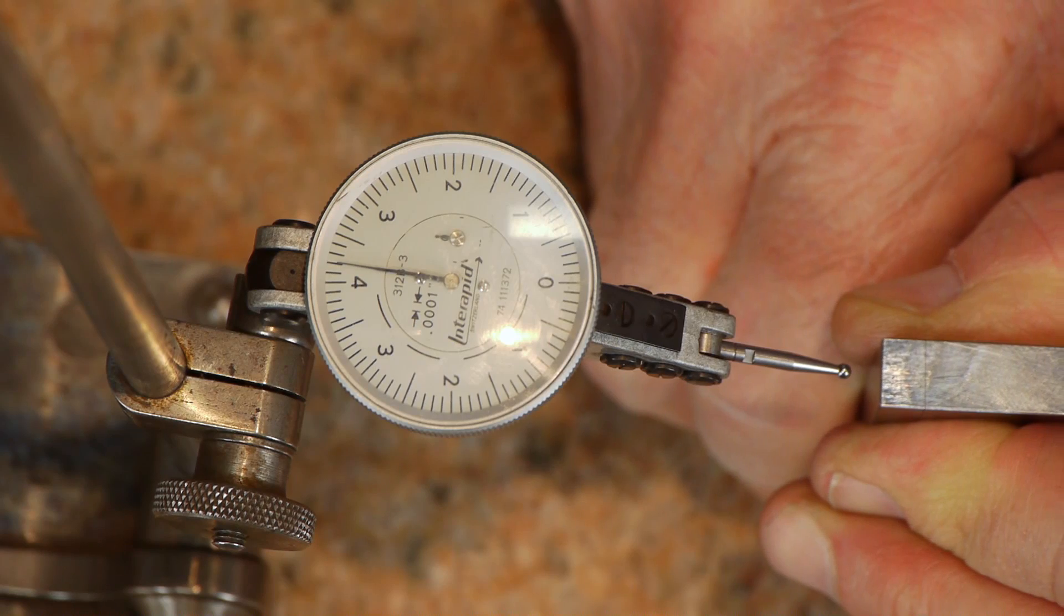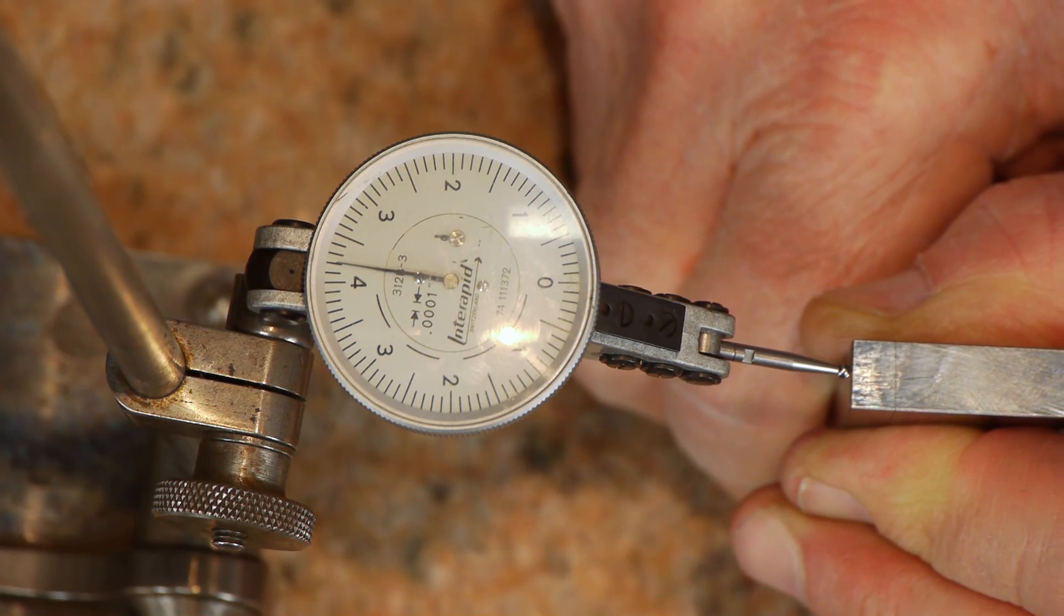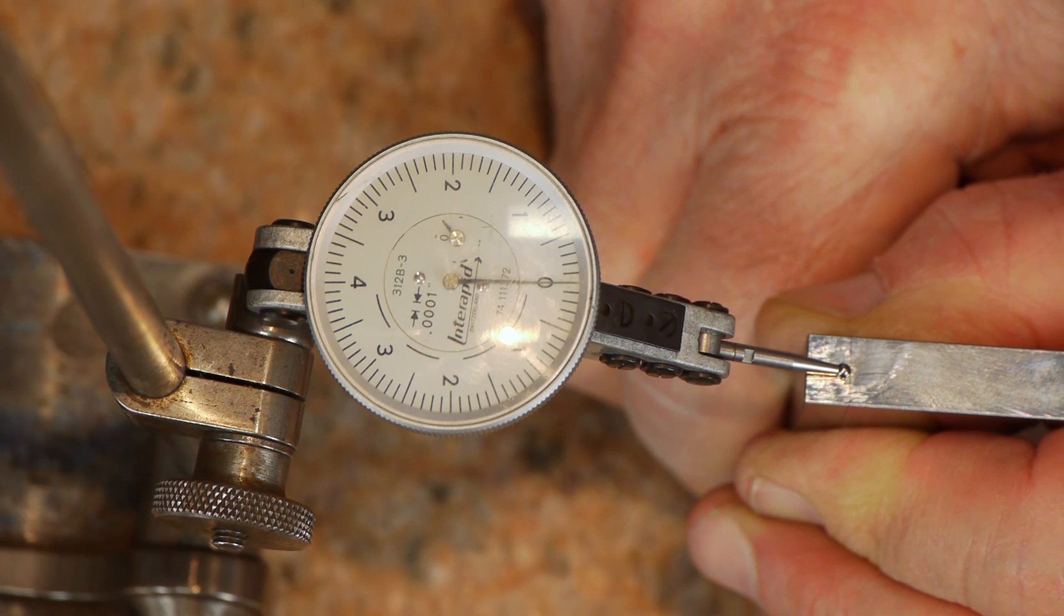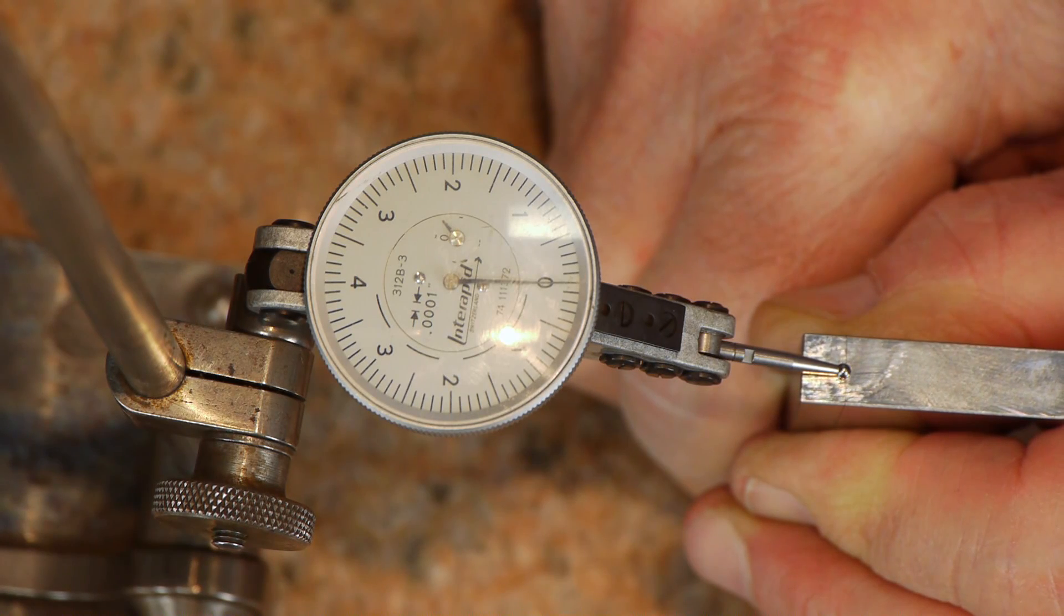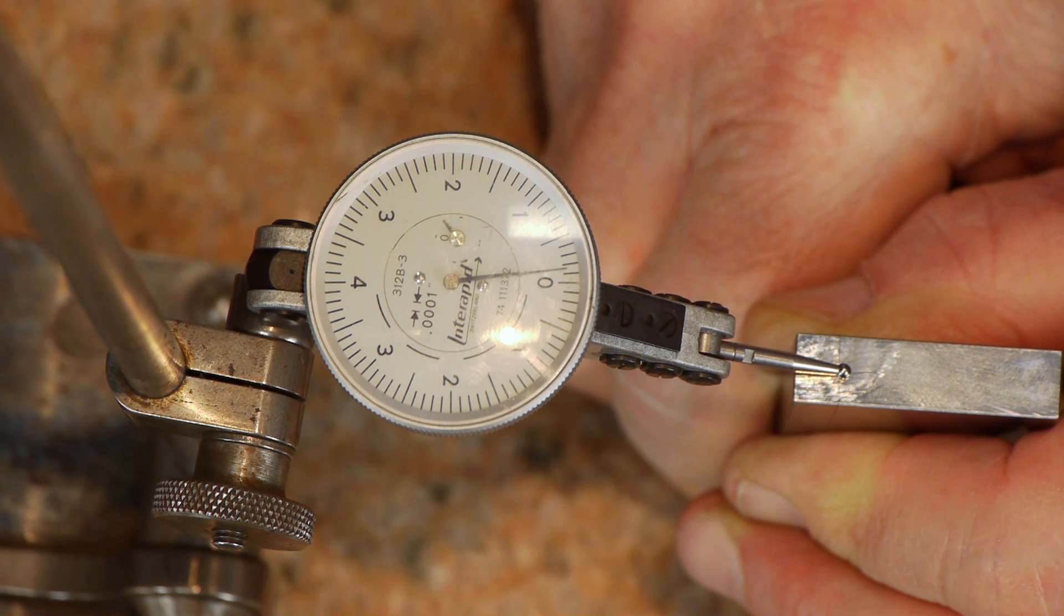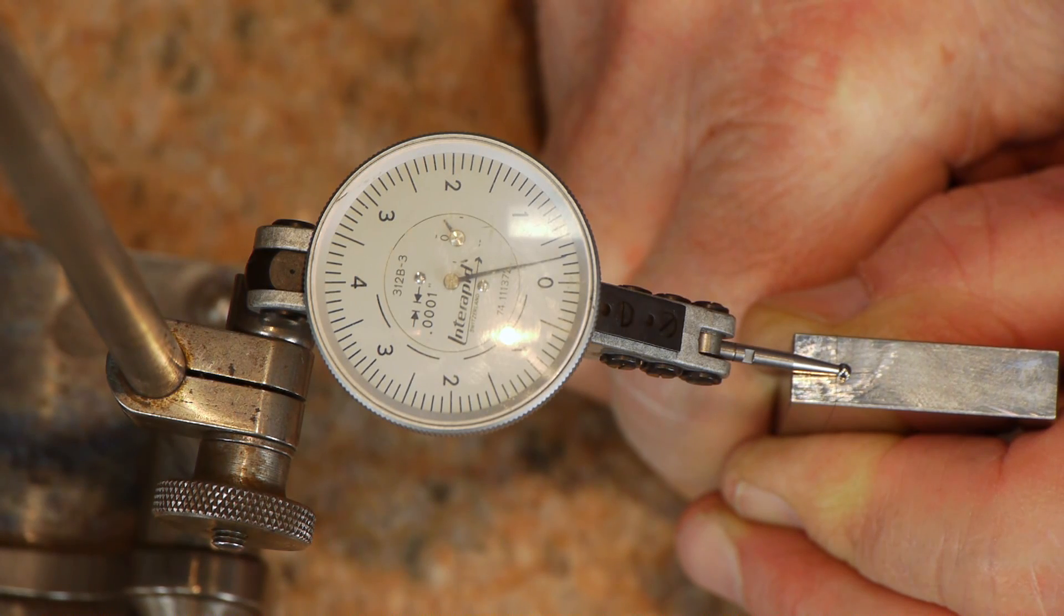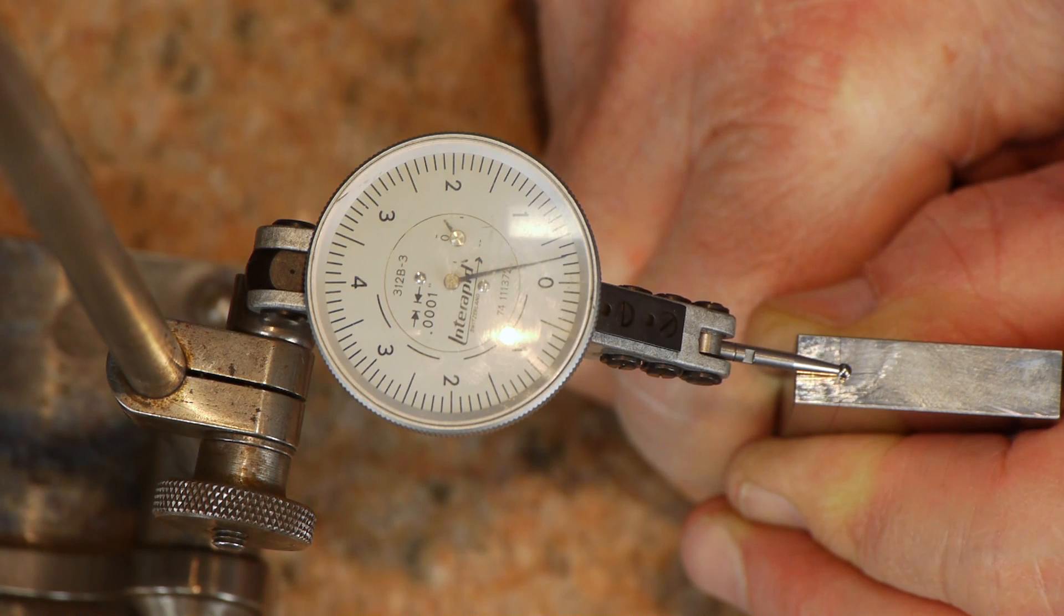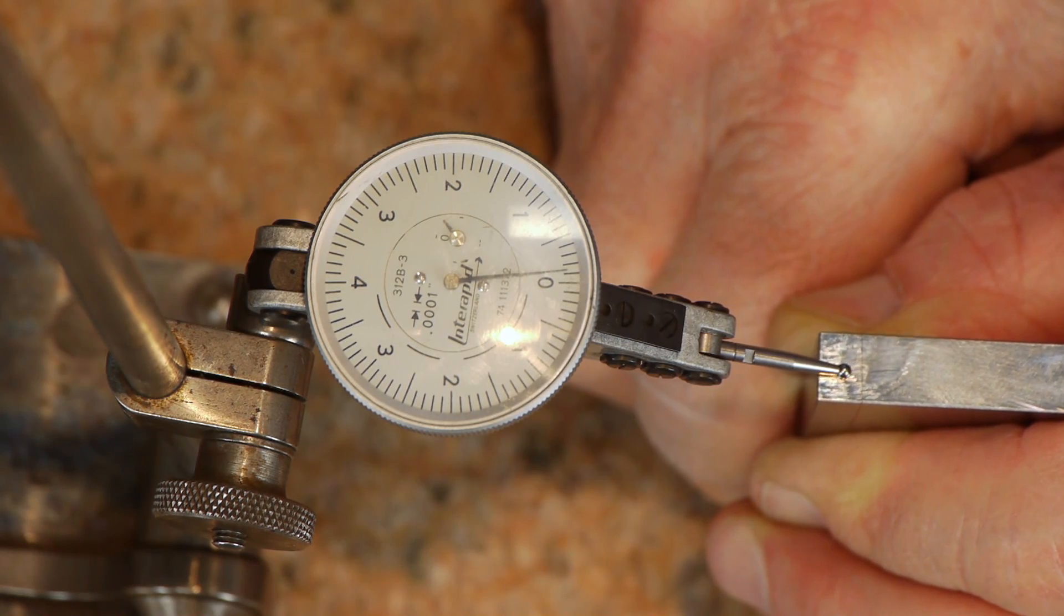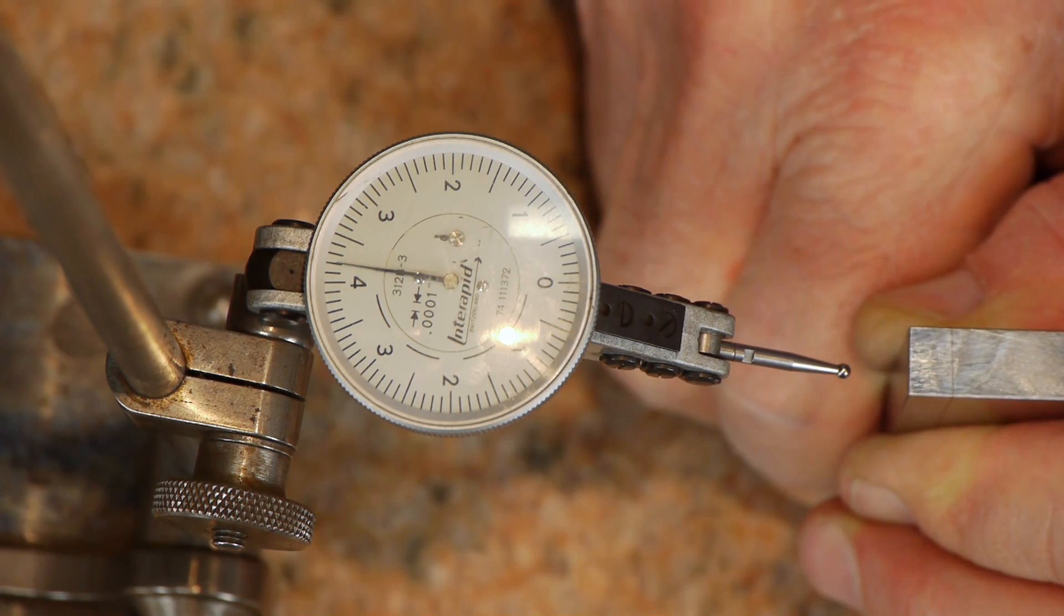I have on this gauge block a human hair, and this is a tenth indicator. I approach the hair approximately two-and-a-half-thousandths. I go back again. The thickness of a human hair is approximately two-and-a-half-thousandths.